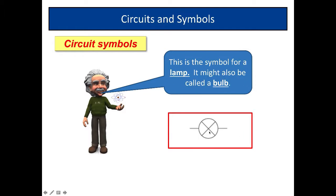This is the symbol for a lamp or a bulb. A light bulb or a lamp. And it's a circle with a cross in it. There are other symbols we used to use but this is the one we use now. This is the modern symbol for a lamp or a bulb.